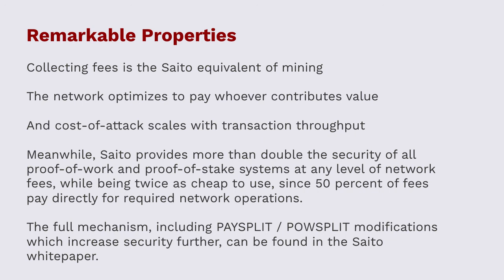In all blockchains using proof-of-work and proof-of-stake, security is paid for by 50% of whatever money is being spent on the consensus mechanism — and since some of those fees go toward network infrastructure, you're actually only being secured by maybe 25% of fee throughput. In Saito, 100% of network fees contribute to security and to the cost of attack. For anyone interested in geeking out over consensus mechanism design, take a look at our white paper and the pay-split modifications — we actually get security well above 100%, to around 125–150%.